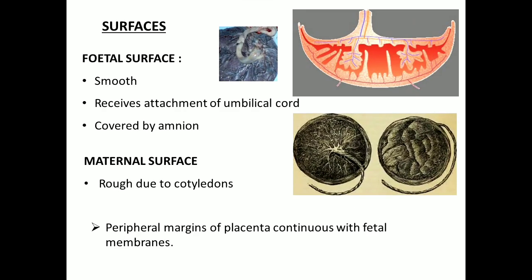The placenta shows two surfaces: the fetal surface and the maternal surface. The fetal surface is at the fetal side, and to this surface the umbilical cord gets attached. The opposite surface is the maternal surface. The fetal surface will be smooth and shows the presence of amnion, while the maternal surface will be roughened, showing multiple cotyledons. The peripheral margins of the placenta will be continuous with the fetal membrane.